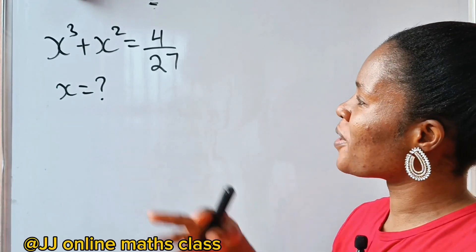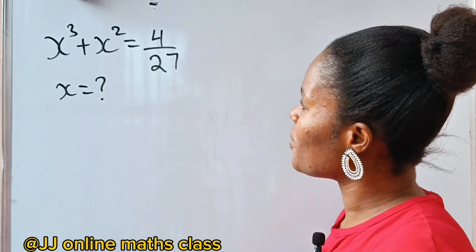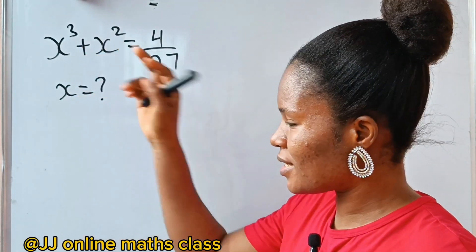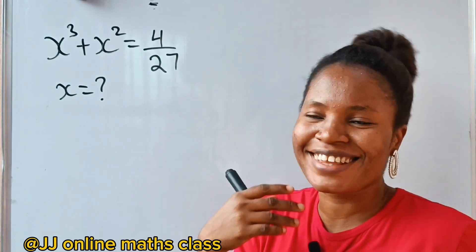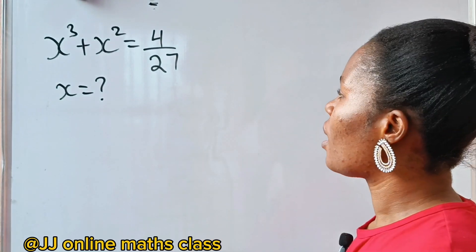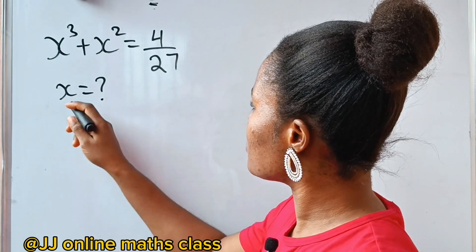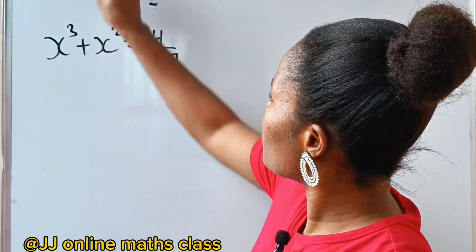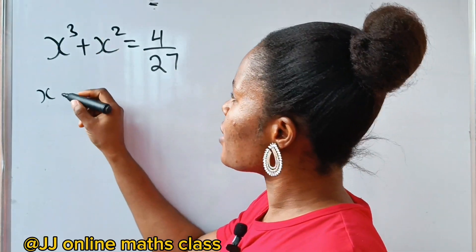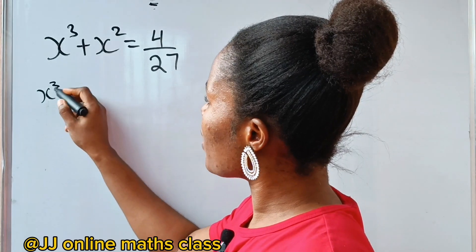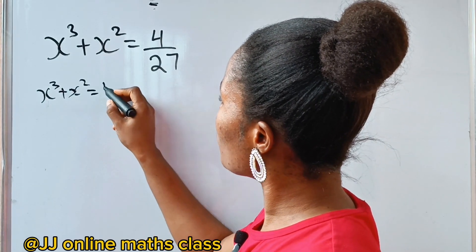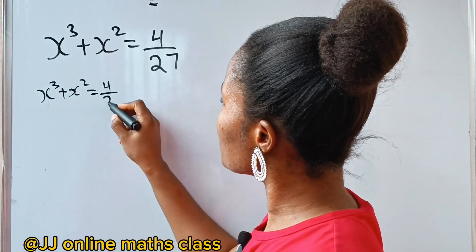Let's see what we have on the board. We are asked to find the value of x. The question is: x cubed plus x squared is equal to 4 over 27.